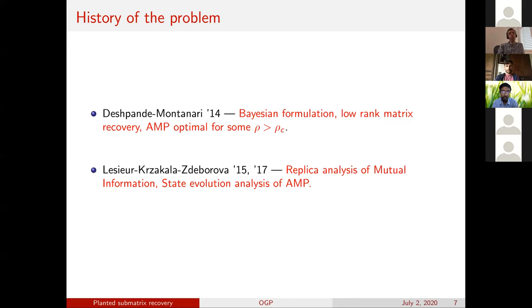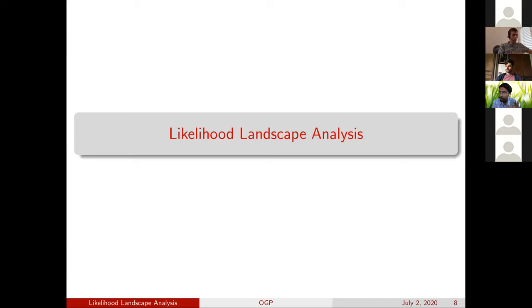So this problem has been looked at in the past. From the best that I know, this was initiated in a work by Deshpande and Montanari who formulated it as a Bayesian problem. There, the entries of the vector V were Bernoulli zero or one with probability rho. Their criteria was in terms of recovering the low rank spike matrix, and they established that an AMP based algorithm would be optimal for rows bigger than some constant row critical. This was followed up on in a series of works by Lassier et al. And they actually first discovered that in this double asymptotic limit, you would expect to have a computationally hard phase in this problem. So today I'll take a slightly different perspective on this and I'll actually look at the behavior of the maximum likelihood estimator for this problem.